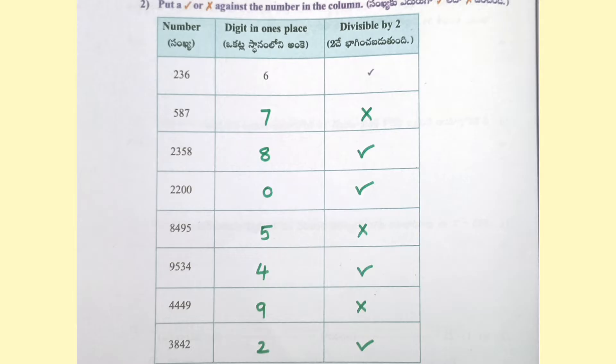8495 — last digit 5, not divisible by 2. 9534 — last digit 4, not divisible by 2. 4449 — last digit 9, not divisible by 2. 3842 — last digit 2, so divisible by 2.